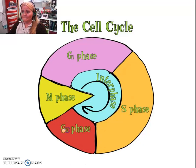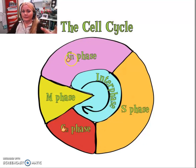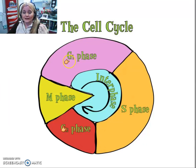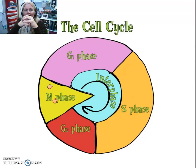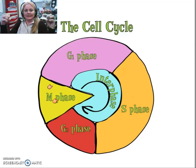Interphase is divided up into the G1, S, and G2 phases — G standing for growth. So in the growth phases the cell is growing. Copies of the organelles are going to be made. The DNA has to replicate during interphase because the M phase is just when the nucleus separates into two new nuclei.